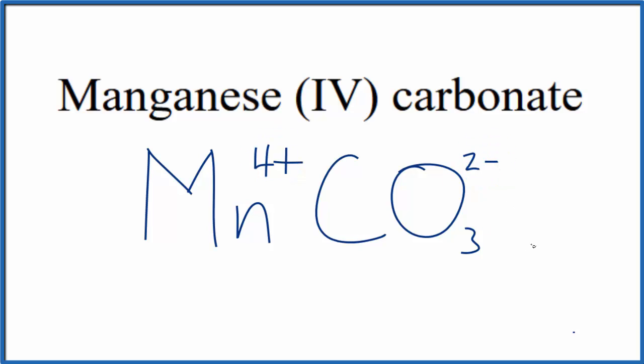If we had 2 of these carbonate ions, because this 2- here is on the whole carbonate, 2 times 2- is 4-. That would balance the 4+, and the net charge would be 0. We would need to use parentheses since we have 2 separate carbonate ions bonded to the manganese.